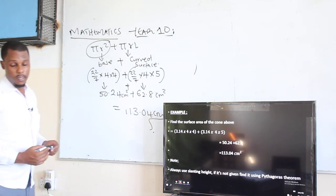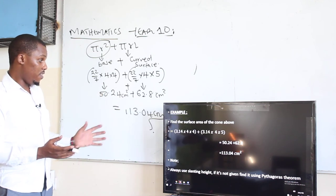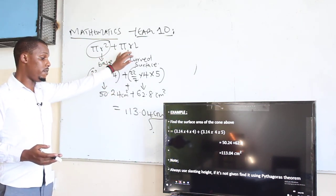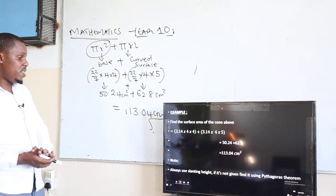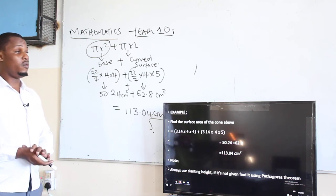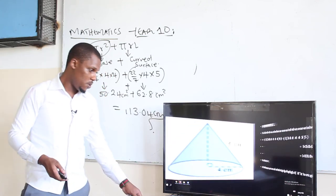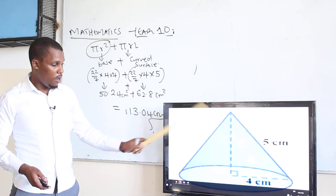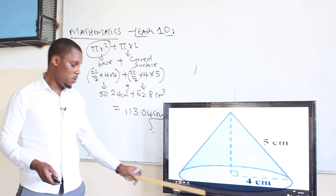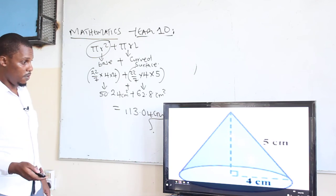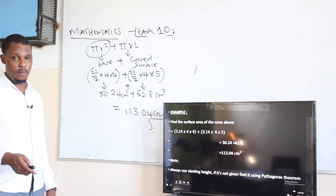That is how you find the surface area of the cone — that is the area of the base, which is the circle, plus the area of the curved surface. Always use the slanting height. If it is not given, then you have to find it using the Pythagorean theorem. If you are given the vertical height, you must apply the Pythagorean theorem to get the slanting length. Make sure that you always use the slanting height.